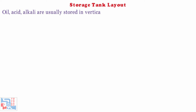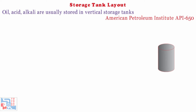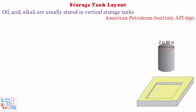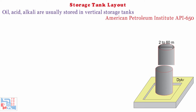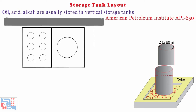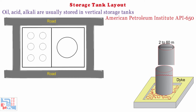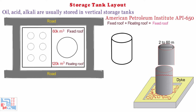Oil, acid, and alkali are usually stored in vertical storage tanks designed as per American Petroleum Institute API 650. These tanks can have different sizes ranging from 2 to 60 meters in diameter or more. They are generally installed inside containment basins called dikes to contain spills in case of tank rupture. Petroleum storage tanks shall be in diked enclosures with roads all around. The aggregate capacity of tanks in one diked enclosure shall not exceed 60,000 cubic meters for fixed roof tanks or 120,000 cubic meters for floating roof tanks. A group containing both types shall be treated as fixed roof tanks for these limits.